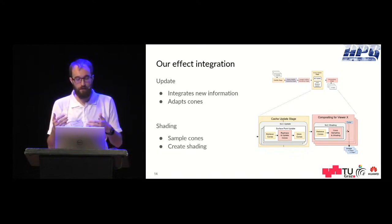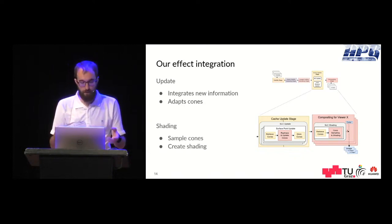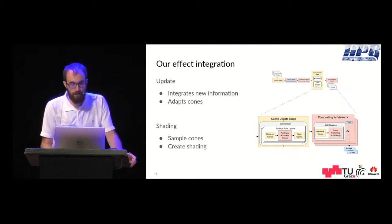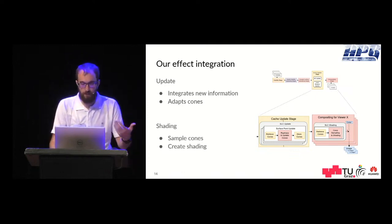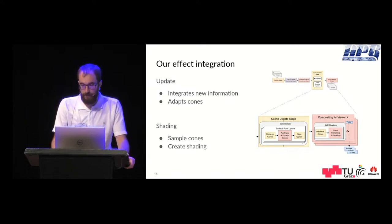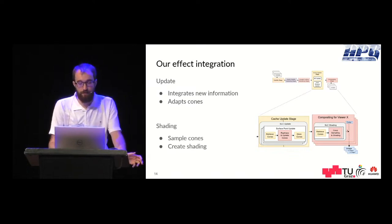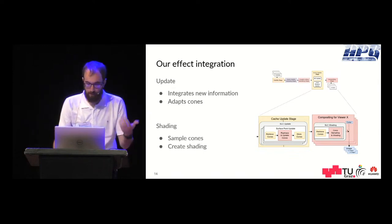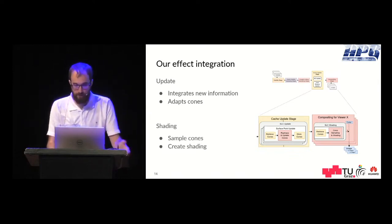The cones are stored in a texture format because that's given by the base system, so we have to do some bit magic and format conversion to fit it in. And after that on a per viewer basis we add the shading where we retrieve the cones and then sample the cones and create the shading and composite it to the other colors of the other effects.